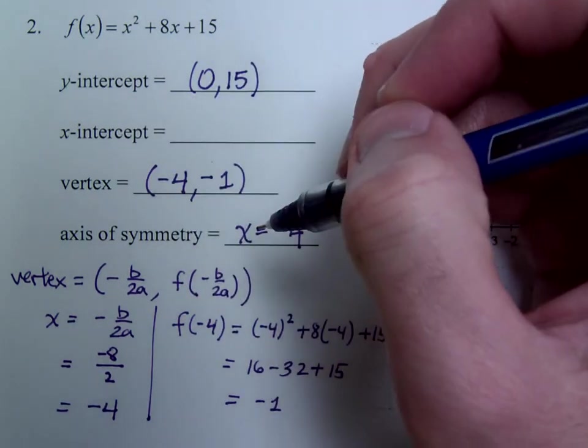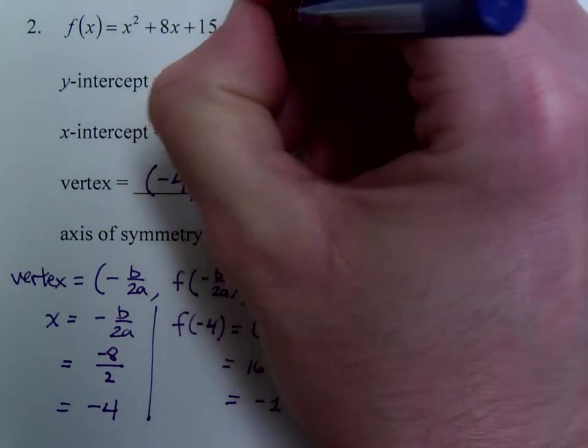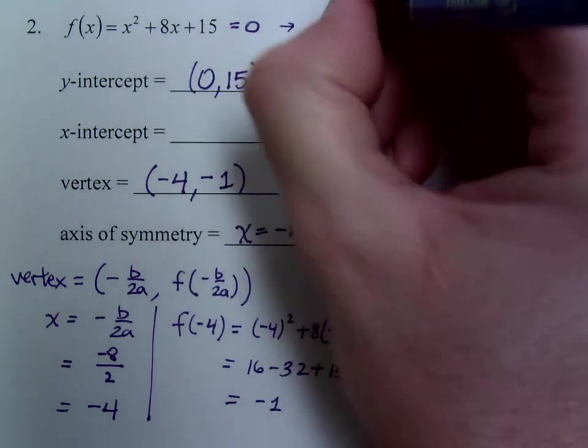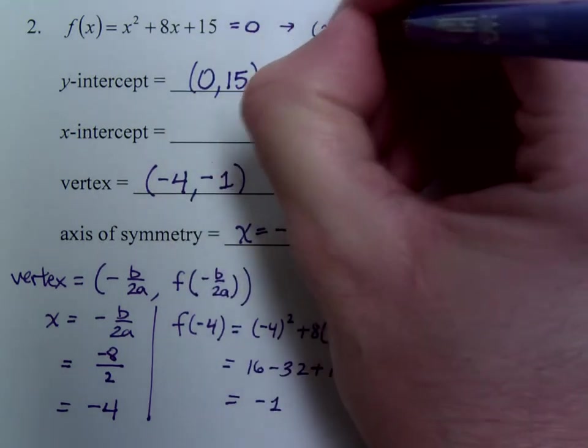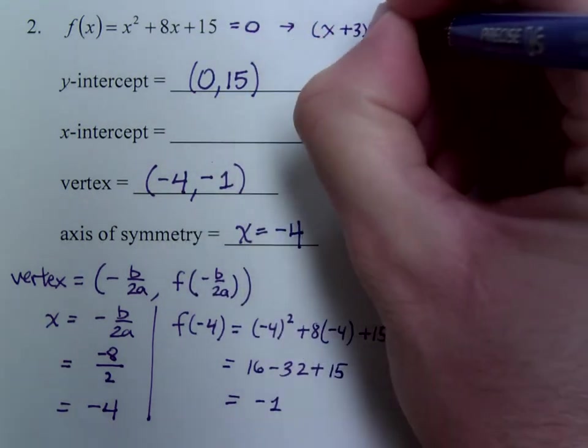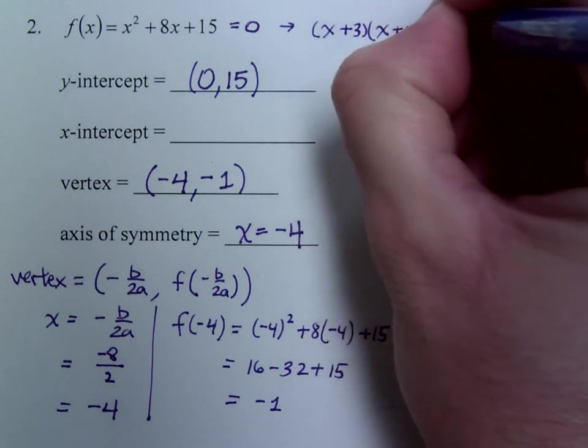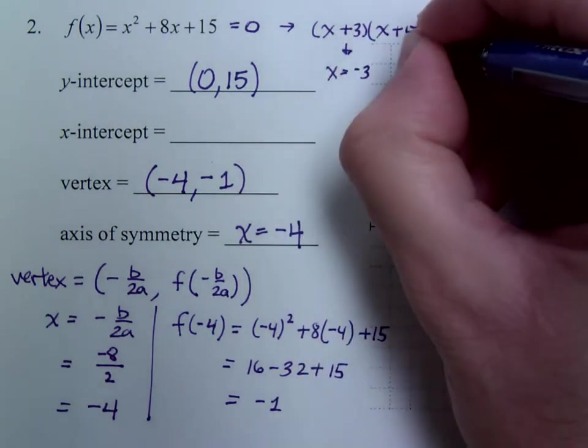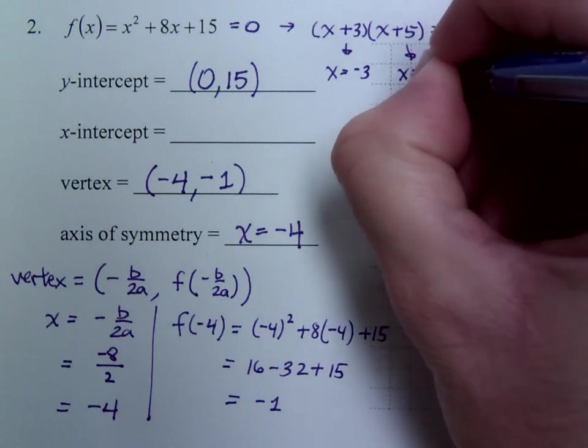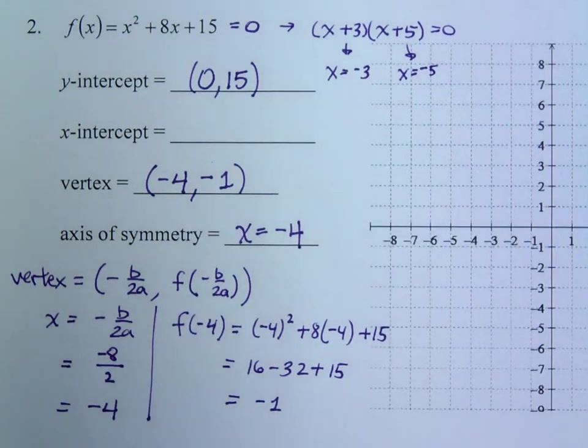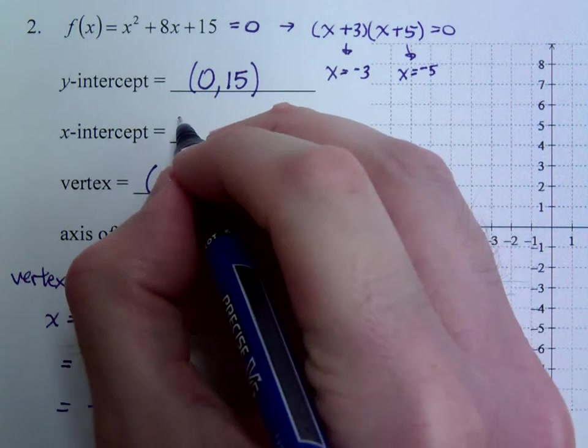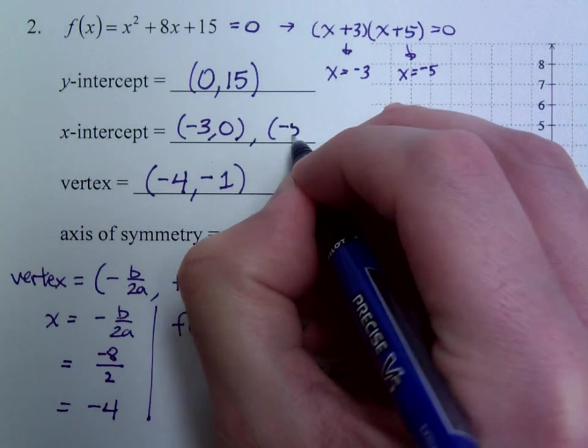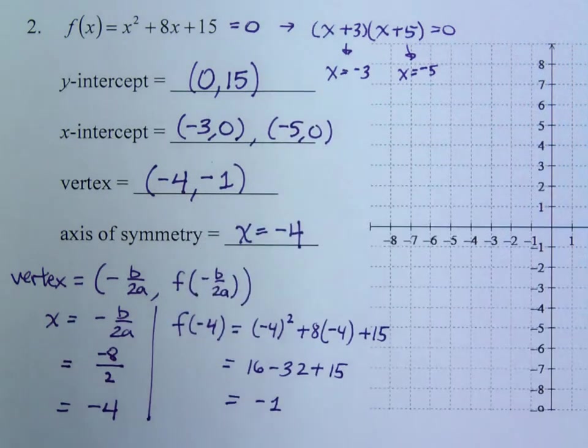The x-intercept is what happens when you set this equal to 0. When you set that equal to 0 and you factor this, you would have x plus 3 times x plus 5 is equal to 0. That means x equals negative 3 and x equals negative 5. So you have two x-intercepts: negative 3, 0 and negative 5, 0.